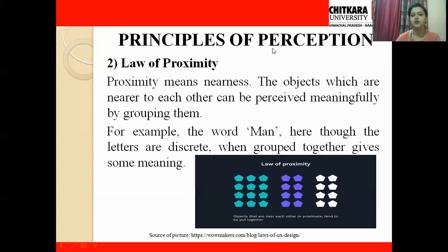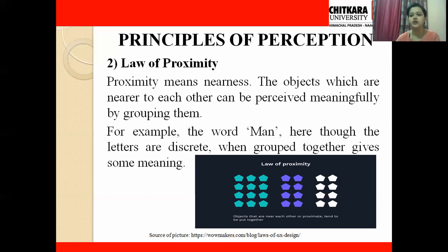The next principle is the law of proximity. Proximity means nearness. Objects that are nearer to each other can be perceived meaningfully by grouping them together. For example, the word 'man' — the letters M, A, and N are individual discrete letters. M is a different alphabet, A is a different alphabet, and N is a different alphabet. Seen as separate parts, they give no particular meaning, but when grouped together, they form the word 'man.' That is the law of proximity.